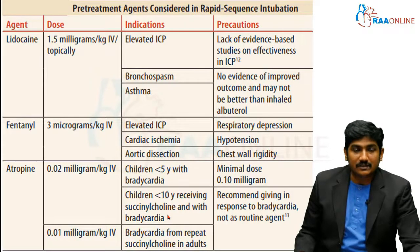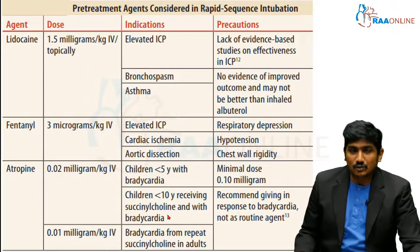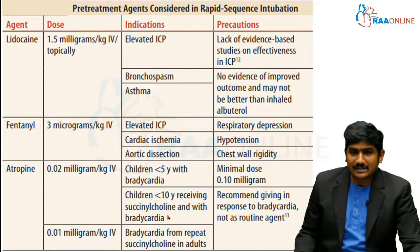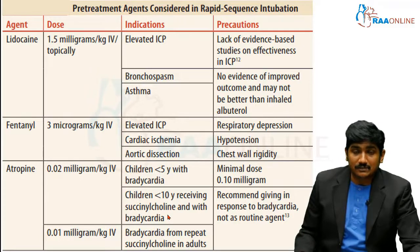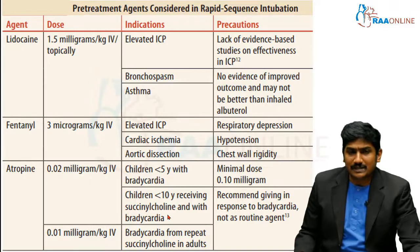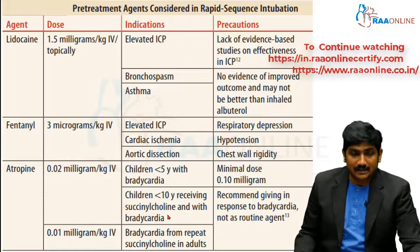Pre-treatment drugs include lidocaine, which was initially used topically over the posterior pharyngeal wall to minimize the gag reflex and decrease sympathetic overactivity in elevated ICP, bronchospasm, and asthma — however, current evidence does not support routine use. Fentanyl at 3 micrograms per kg IV can significantly decrease sympathetic overactivity in cases of elevated ICP, cardiac ischemia, or aortic dissection, but beware of respiratory depression, hypotension, and chest wall rigidity. Atropine at 0.02 mg/kg IV (minimum 0.10 mg) is used mostly in pediatric patients with bradycardia, but only if symptomatic bradycardia is present.